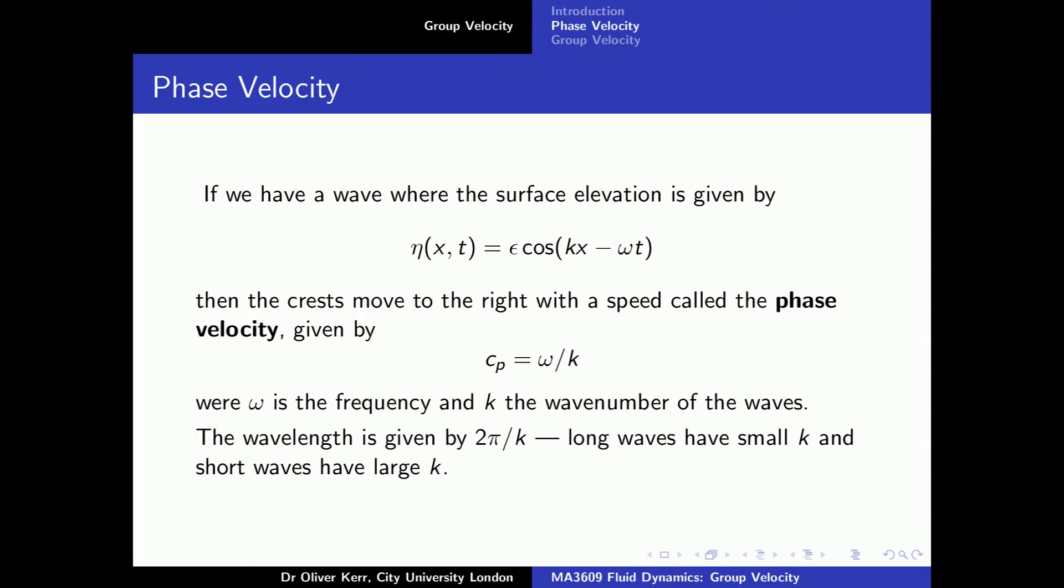We will look at waves on water where the surface elevation is given by eta, which is equal to epsilon times the cosine of kx minus omega t. k is called the wave number and omega the frequency of the waves. These waves will move to the right with a speed given by omega divided by k. We call this speed the phase velocity. We will use the notation c with a subscript p for this phase velocity.